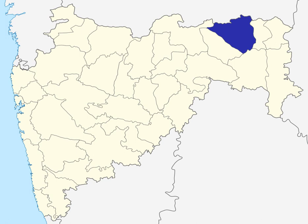In 1853, after the death of Raghoji III, the princely state of Nagpur was annexed by the British and the territory occupied by the present district became part of the then Nagpur province. In 1861, it was merged with the Central Provinces. In 1903 it became part of the Central Provinces and Berar. In 1950, Nagpur district was created and became part of the newly formed Madhya Pradesh state, and Nagpur became its capital.